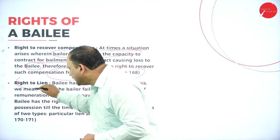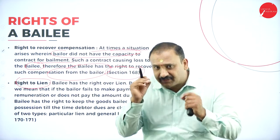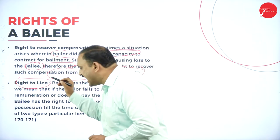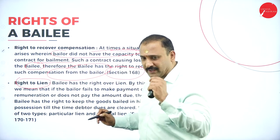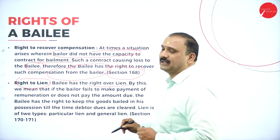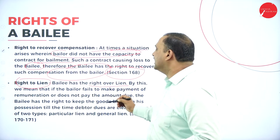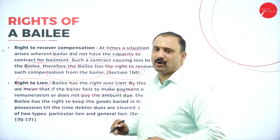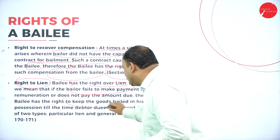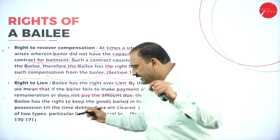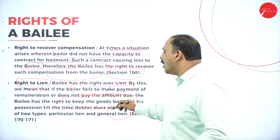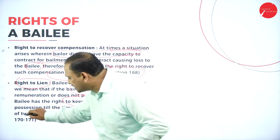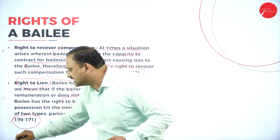The next right is the right to lien — spelled L-I-E-N, not L-I-O-N. If the bailer fails to make payment of the remuneration or does not pay the amount due, the bailee has the right to keep the bailed goods in possession until the debtor clears the dues. This lien can be of two types — particular or general — discussed in Sections 170 and 171.